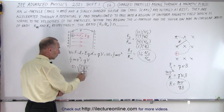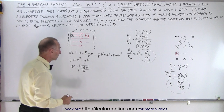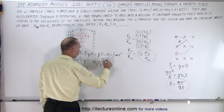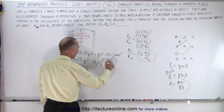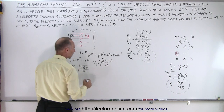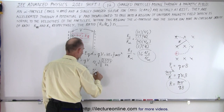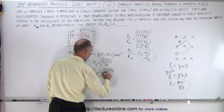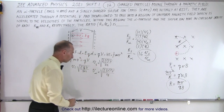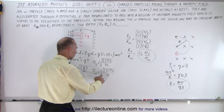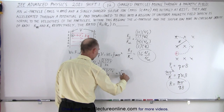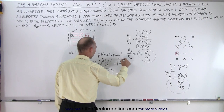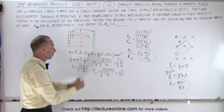Each particle has a different Q and a different M. The velocity of the sulfur ion equals √(2 × 1 × V / 32), and the velocity of the alpha particle equals √(2 × 2 × V / 4). Simplifying: the sulfur velocity gives √(V/16), and the alpha velocity gives √(V). Now we are ready to plug these into the ratio equation.